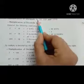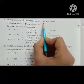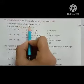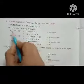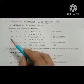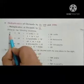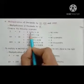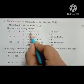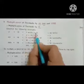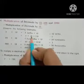Multiplication of decimals by 10, 100, and 1000. First, we discuss multiplication by 10. Observe the following examples. For 0.5 into 10 — here 5 is in the tenths place. And 0.5 into 10 means we move the decimal point one place to the right.